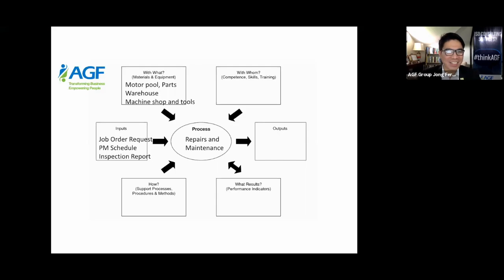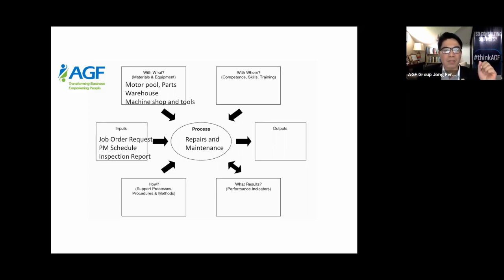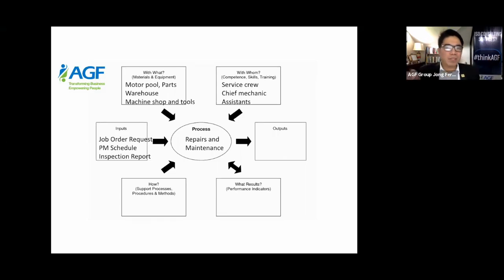For materials and equipment in repairs and maintenance, we need a motor pool, spare parts for replacements, a warehouse to store tools and equipment, a machine shop, and tools. A participant also mentions serviceable equipment — correct. You list down all materials and equipment needed in order to successfully run this procedure.